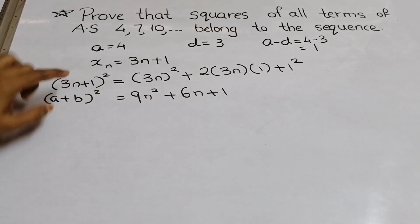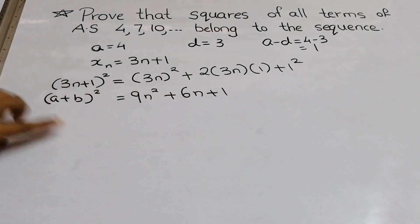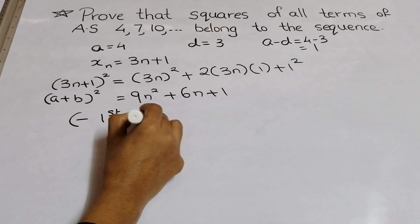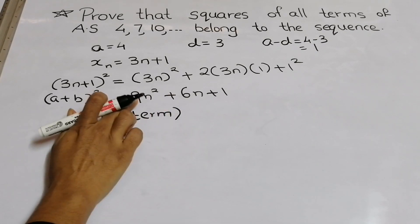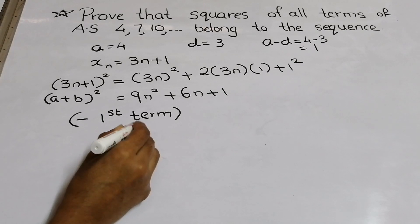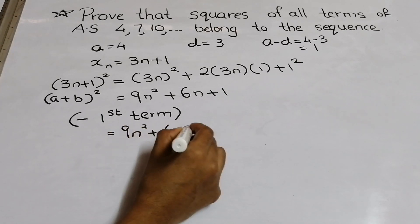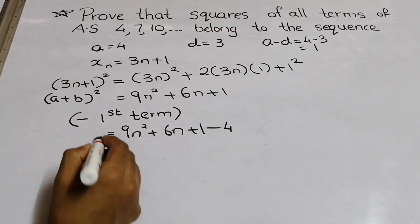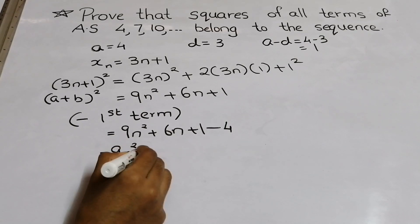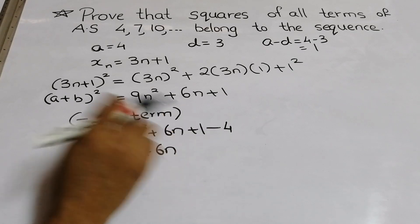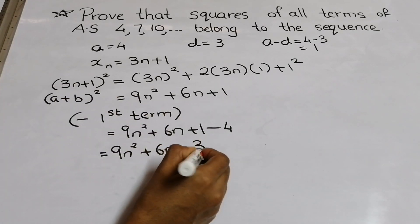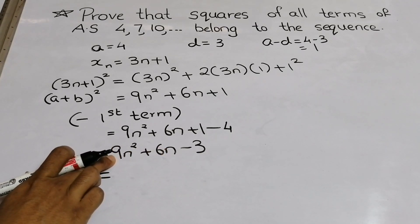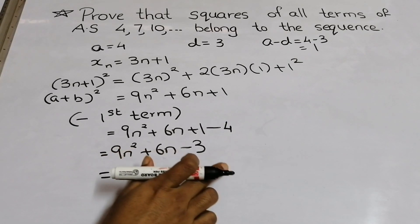Now the second step is to subtract the first term from this expanded form. So we compute 9n² + 6n + 1 minus 4, which gives 9n² + 6n minus 3. Now what is common here? We can take 3 as a common factor from all three terms.